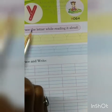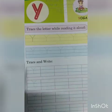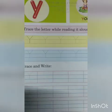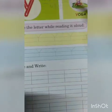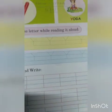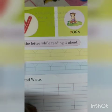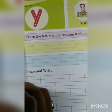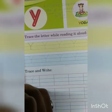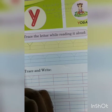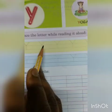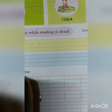So how do you write Y? Today we learn to trace the letter while reading it aloud. Okay, so first of all, you see there are four lines in English copies — one, two, three, and four. In line three, you just have to follow the lines here.